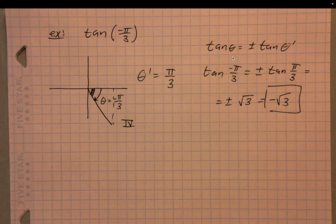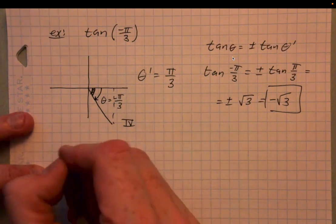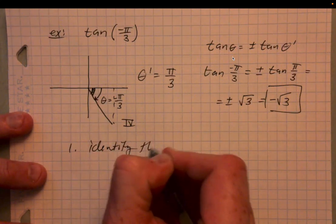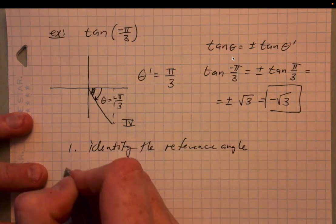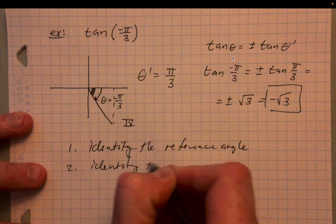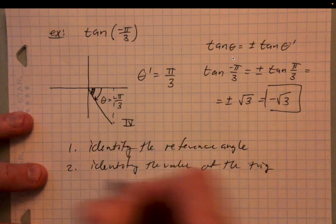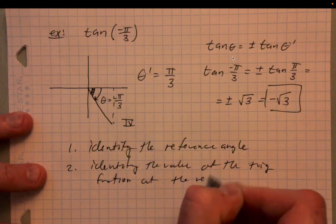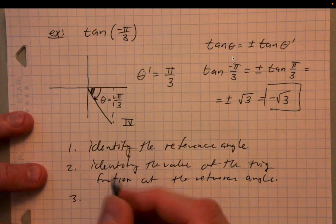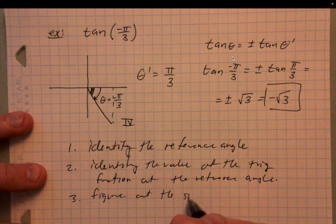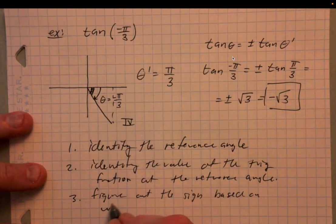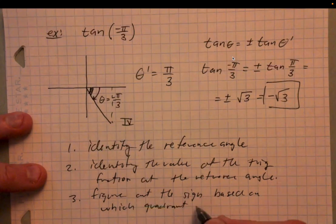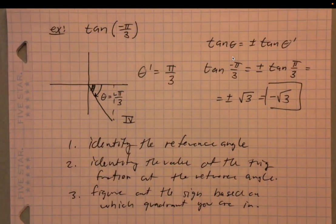To summarize the three-step reference angle process: step one, identify the reference angle; step two, identify the value of the trig function at the reference angle; step three, figure out the sign based on which quadrant the original angle is in. This process works for any angle and any trig function.